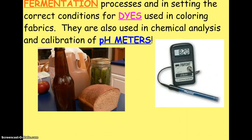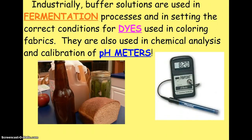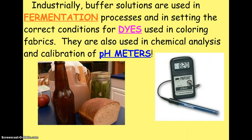Industrially, buffer solutions are used in the fermentation process — making ciders, pickles, alcoholic beverages, wine, beers, etc. They're also used for the setting of dyes and to calibrate pH meters. That's the gist of buffers. Check out the article I gave you for more in-depth information on what's going on in your body as far as our buffer systems.